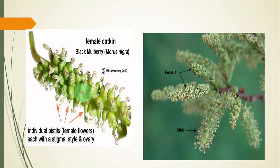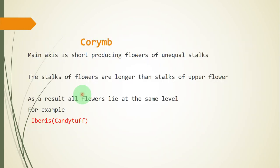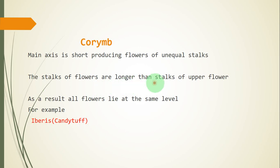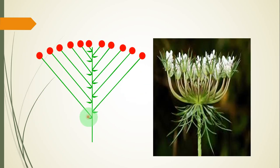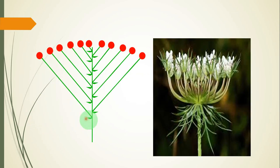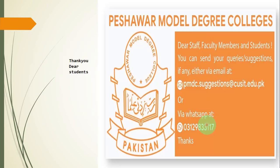The fourth type is corymb. In corymb, the main axis is short, producing flowers of unequal stock. The stock of the lower flower is longer than the stock of the upper flower, so as a result all flowers lie at the same plane. For example, Iberis or Candida. You can see the lower stocks are longer compared to upper flowers, but all flowers end up at the same level.